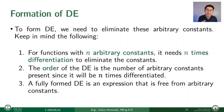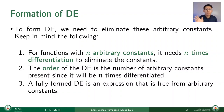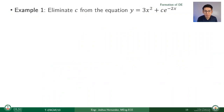To form a DE, we need to eliminate arbitrary constants. Keep these things in mind: number one, for functions with n arbitrary constants, it needs n differentiations to eliminate the constants. That number of differentiations is also the order of that DE. And finally, a fully formed DE is an expression that is free from arbitrary constants.